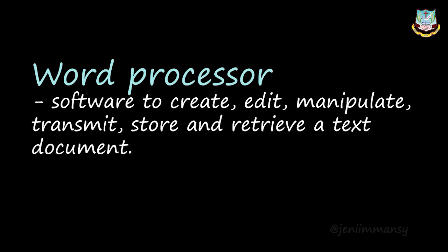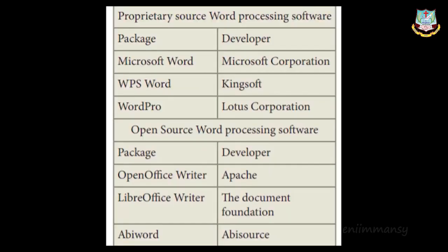Word processing is the activity carried out by a computer with suitable software to create, edit, manipulate, transmit, store, and retrieve text documents. The familiar word processing packages are: Microsoft Word — the developer is Microsoft Corporation; WPS Word — the developer is Kingsoft; Word Pro — from Lotus Corporation. These are all word processing softwares.